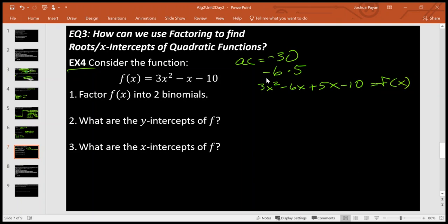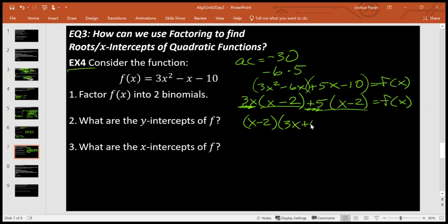Okay, group and factor. So on the left, factor out a 3x. Brain fart. And on the right, factor out a 5, a positive 5, so plus 5(x - 2) also. Okay, GCF of x - 2. When I factor out that GCF, I'm left with another factor of 3x + 5. Okay, so did this. Cool enough.